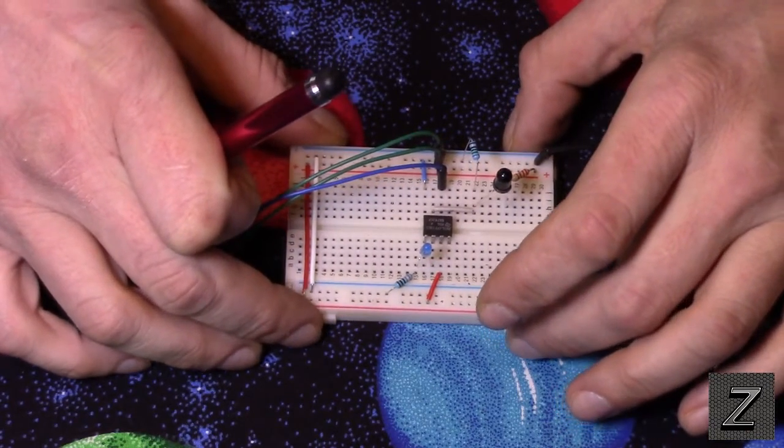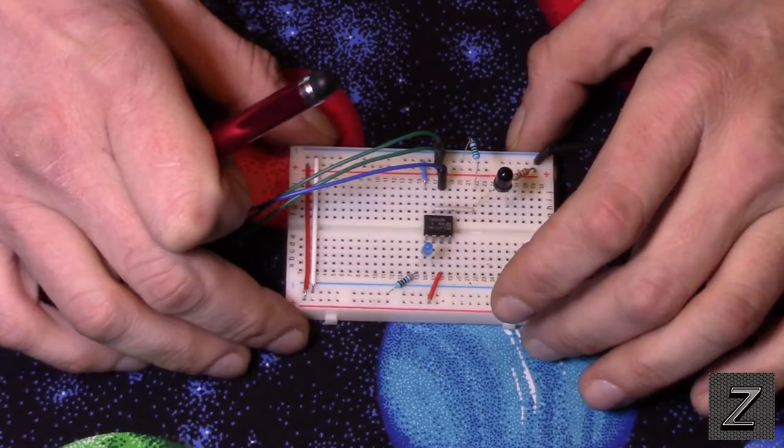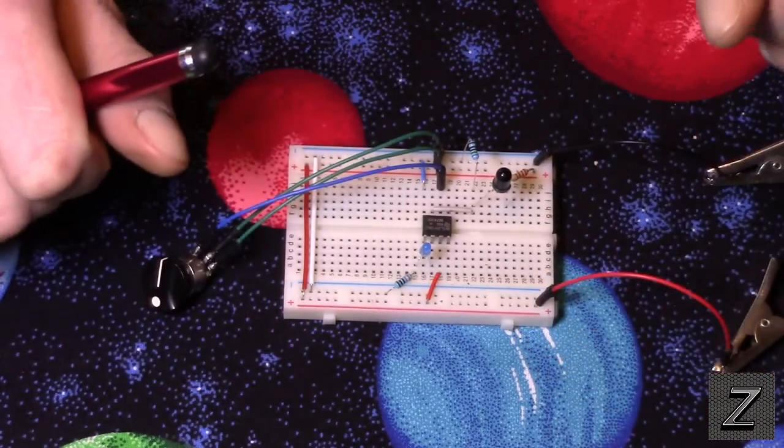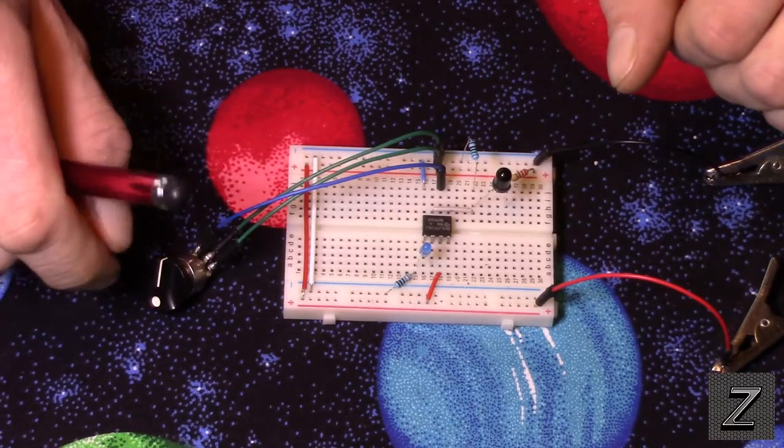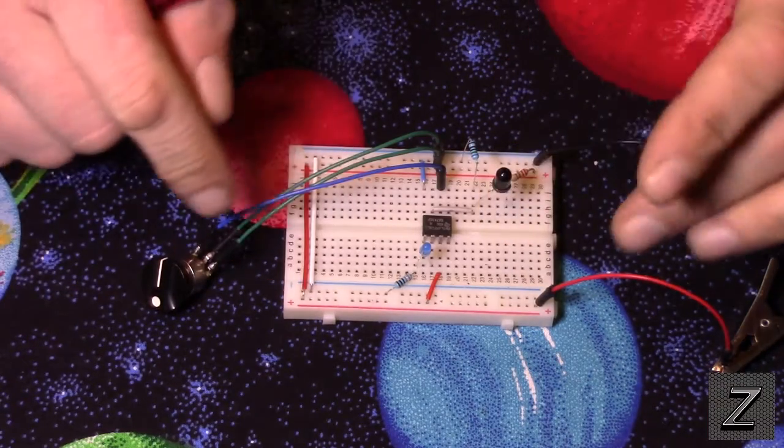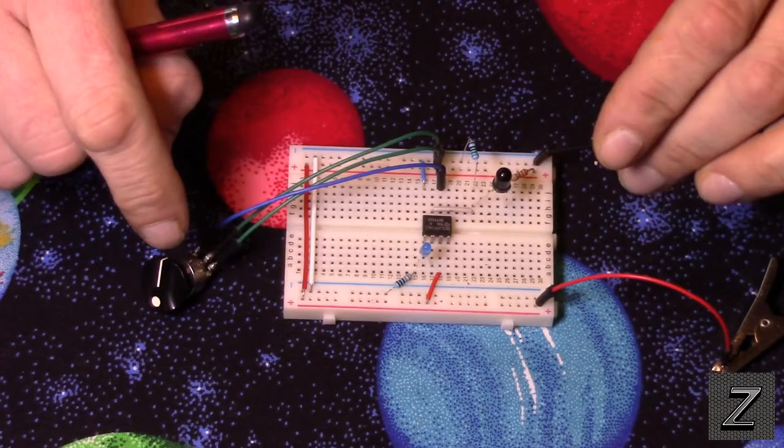Now you can go on eBay, Amazon, Geek, a bunch of different places, Deals Extremes, and you can buy these little boards that are built. It's the same thing basically.